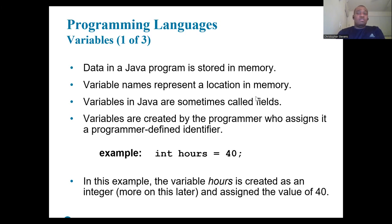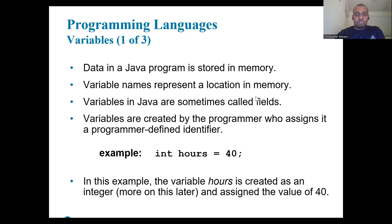Data in a Java program is stored in memory, and variable names represent locations in memory. Variables are often called fields. Programmers create variables by assigning them programmer-defined identifiers. For example, int hours = 40; — in this example, the variable hours is created as an integer and assigned the value 40. We'll cover data types more soon.